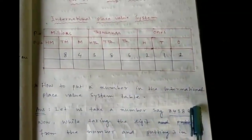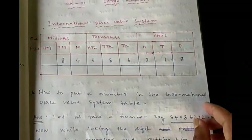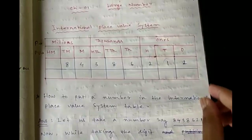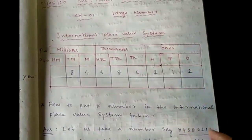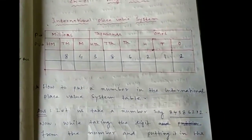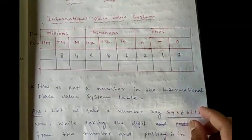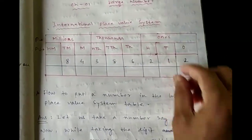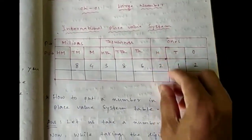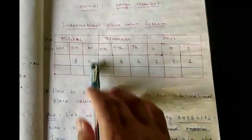Now, how to put a number in the International Place Value System table? We take a number and put it into the table. In both cases we start from the ones place, that is from the right side. We take two and put it in ones place, one in tens place, two in hundreds place — like this, we put digits one by one from right to left.